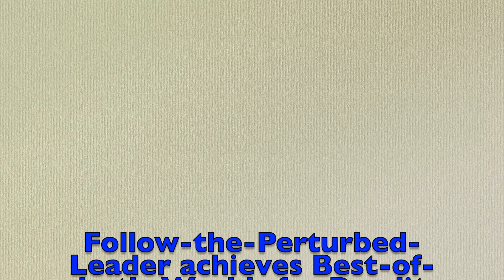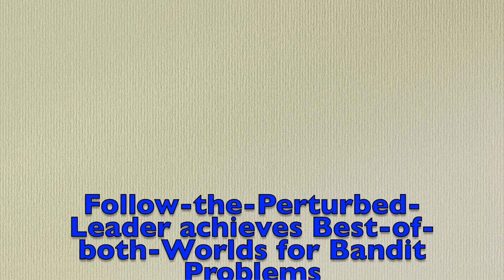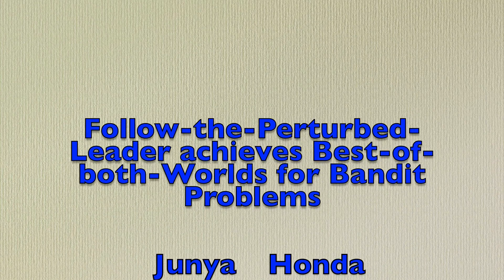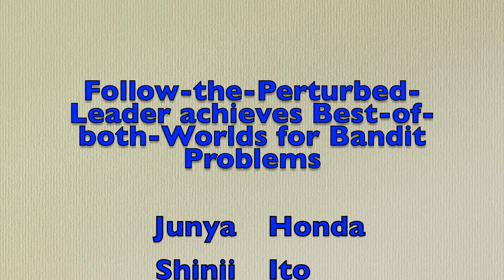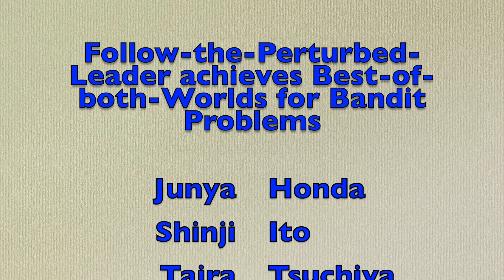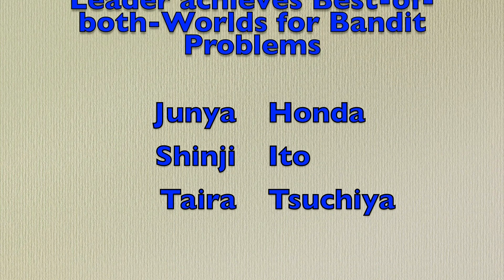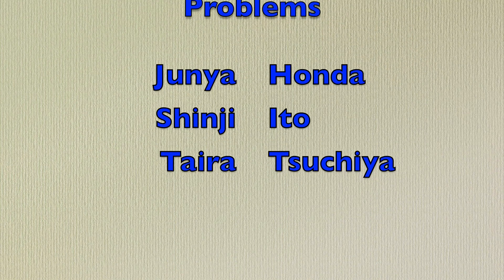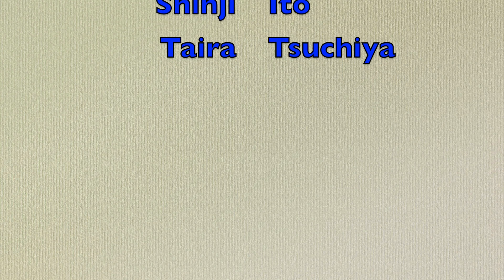In particular, we are going to solve a conjecture on so-called best of both worlds algorithms. Today's paper is titled 'Follow the Perturbed Leader Achieves Best of Both Worlds for Bandit Problems.' It has been written by Junya Honda, Shinji Ito, and Taira Tsuchiya, and was published in 2023 at the prestigious conference Algorithmic Learning Theory.